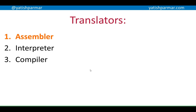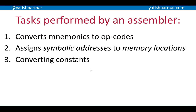The first type of translator is an assembler. The tasks performed by an assembler are: first, it converts mnemonics — such as ADD, STORE, LOAD — into binary opcodes. Second, it takes symbolic addresses, for example num1, num2, x, y — the names you've given to your variables — and converts them into memory locations.